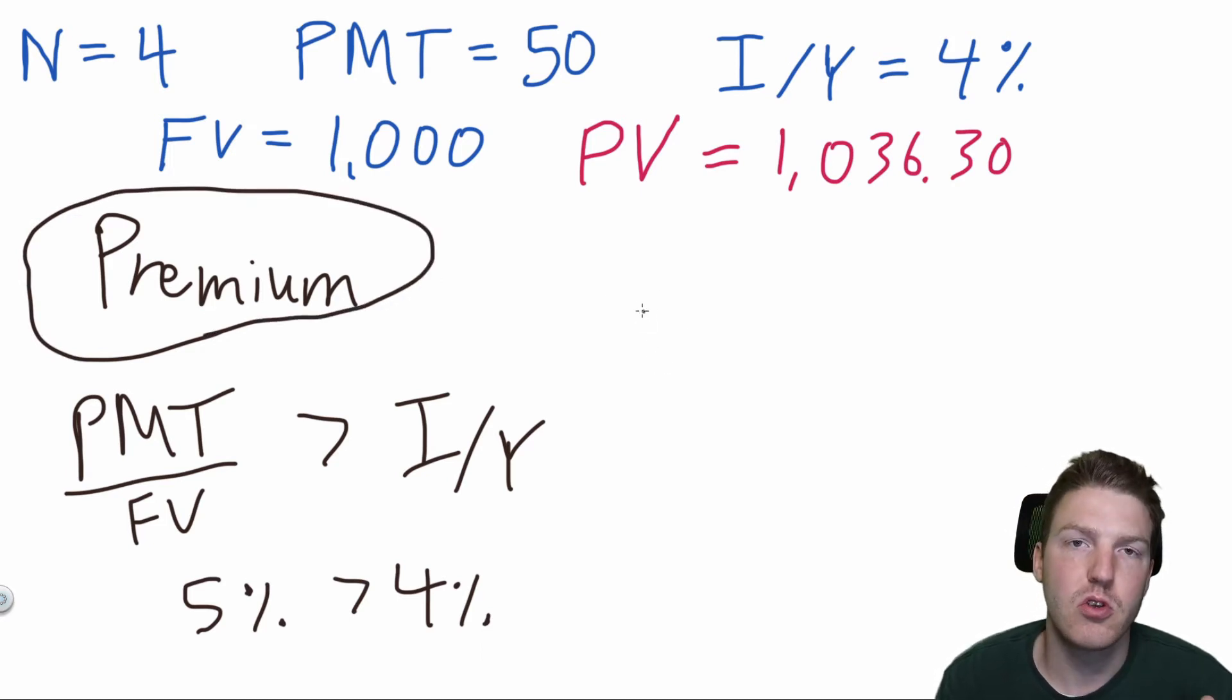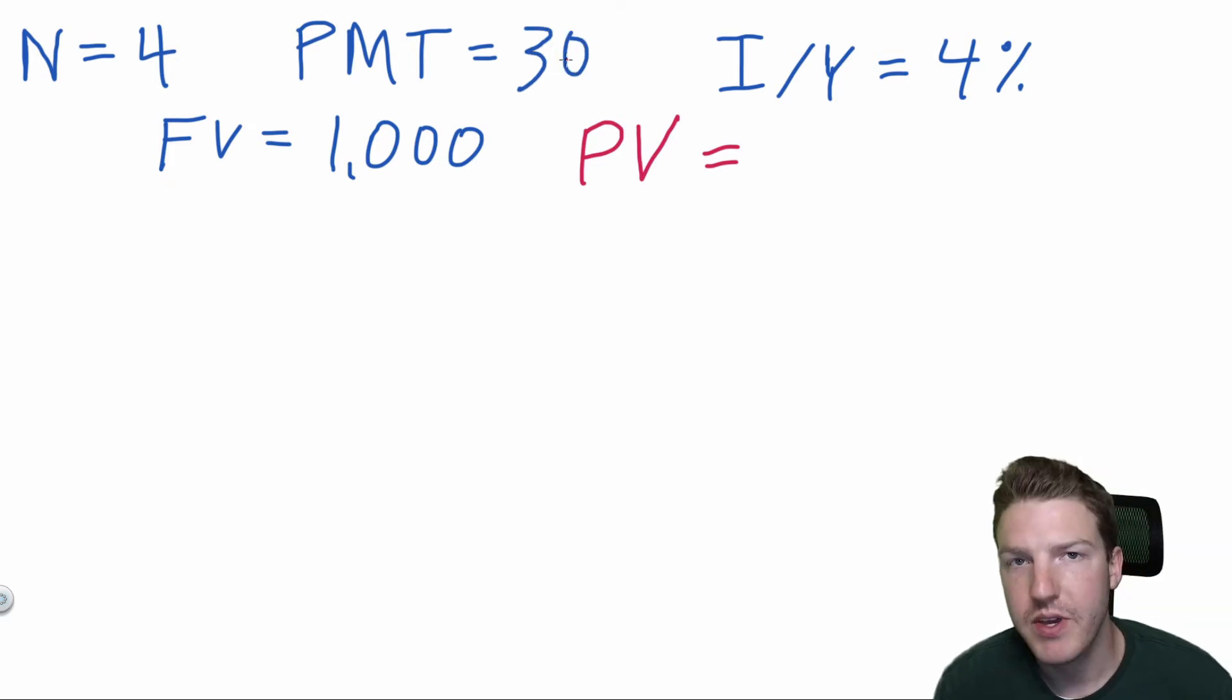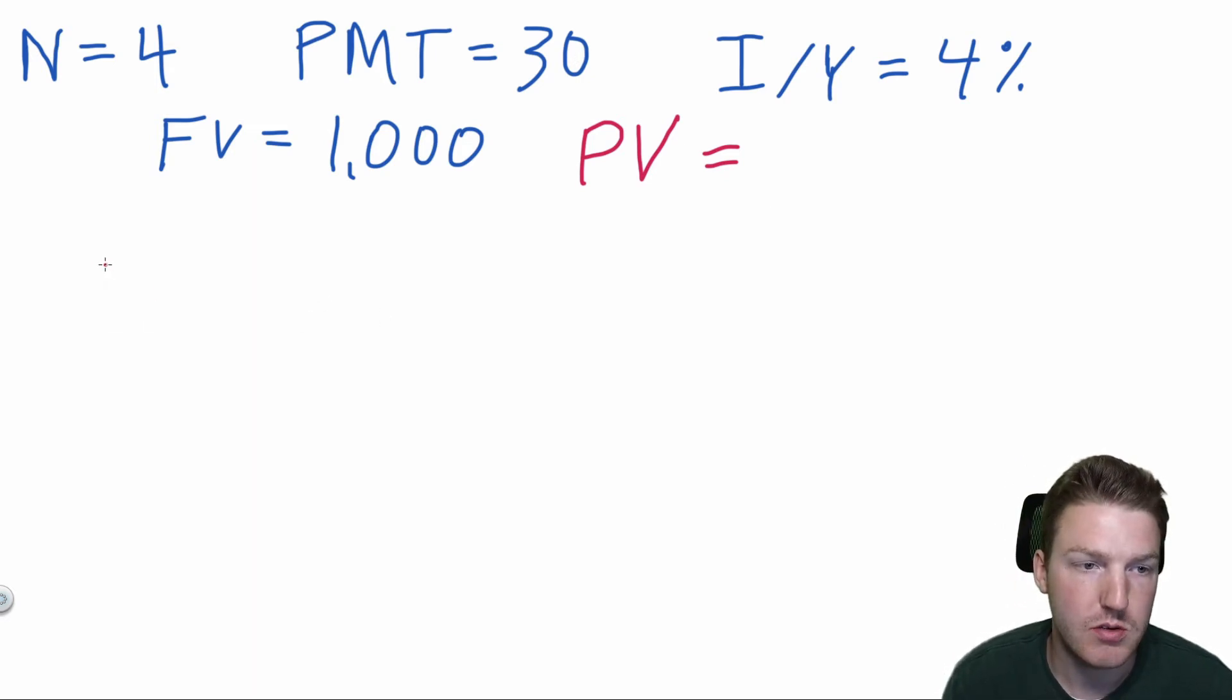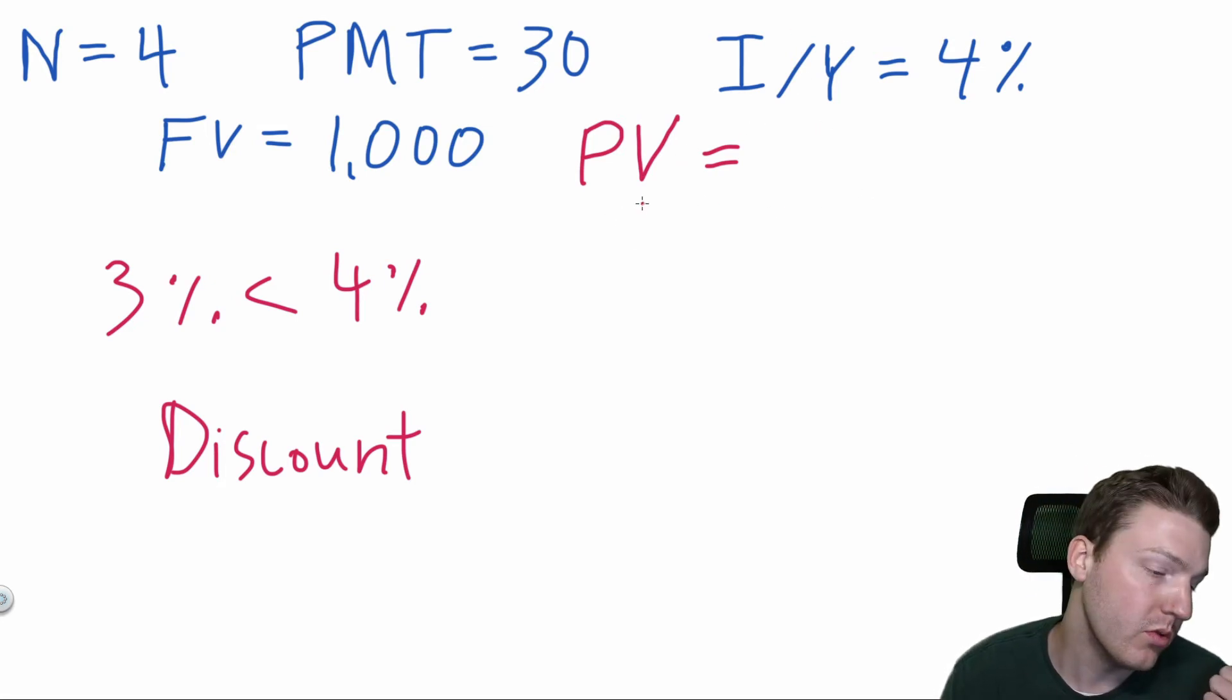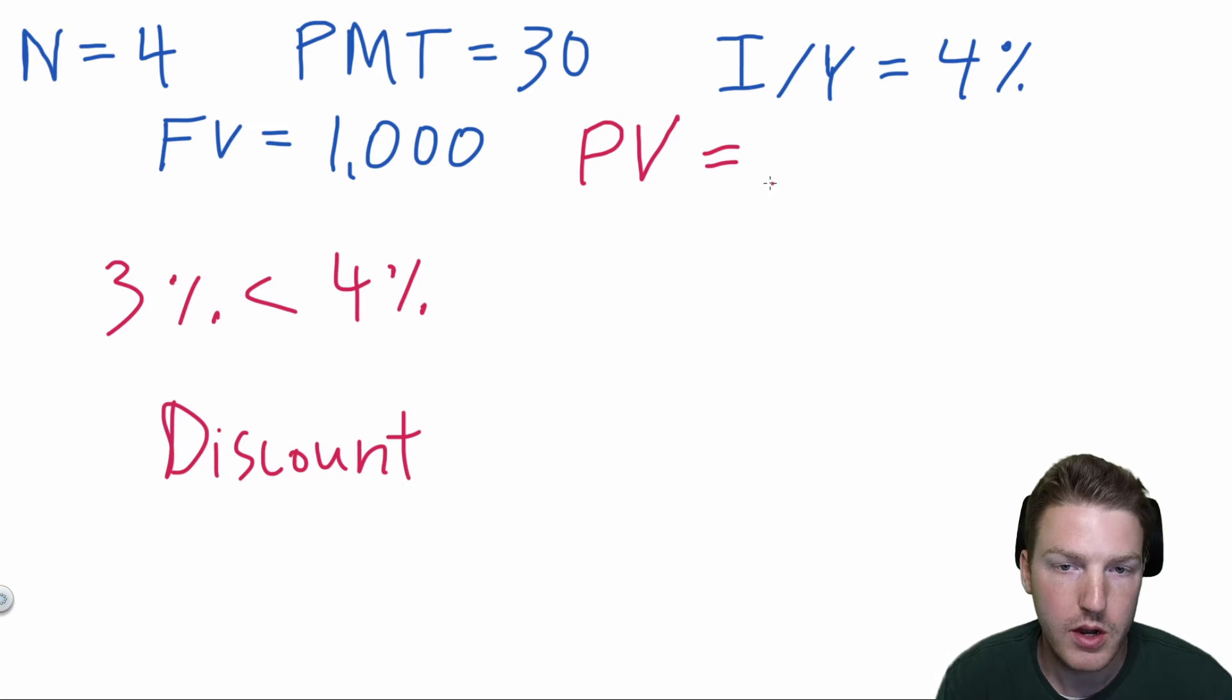But let's see what happens if we decrease our payment rate to say 30. Now we've got a payment of 30, which implies a coupon rate of 3%. But 3% is below the interest per year or the yield to maturity, which implies that our bond should actually be trading at a discount. So if you put in all of these four inputs at the top into a financial calculator, or you do the same kind of calculation that we did before, you'll find that the present value for this bond is actually $963.70, which is less than $1,000. So the market expects an interest rate of 4%, that's the yield to maturity, but this bond only pays 30. So no one would be willing to pay $1,000 for it, they'll be willing to pay less than $1,000 for it.